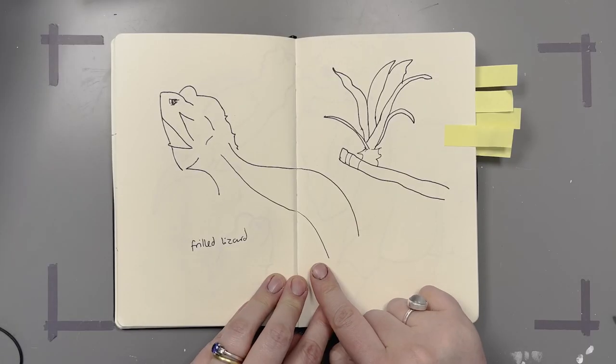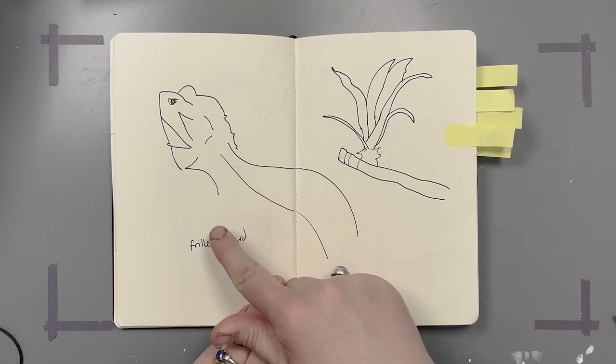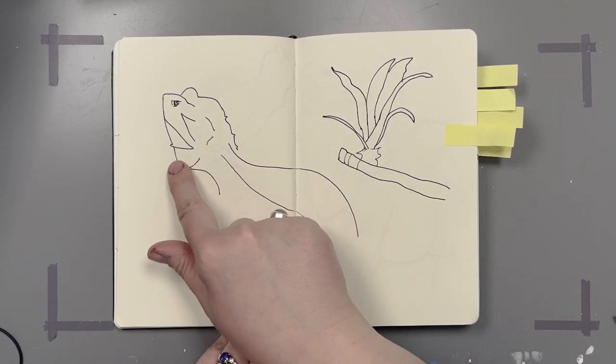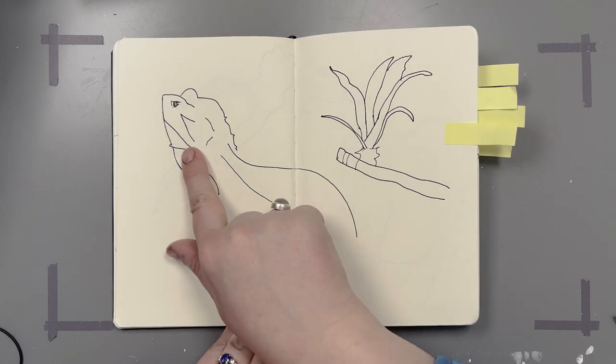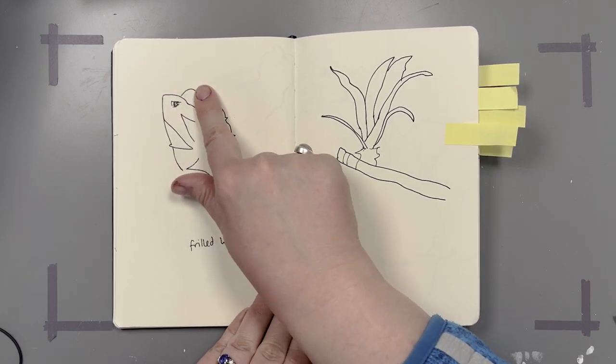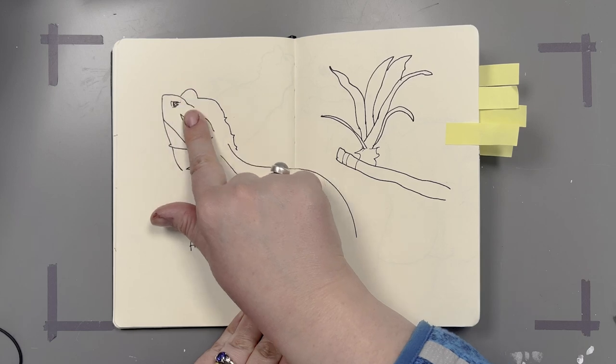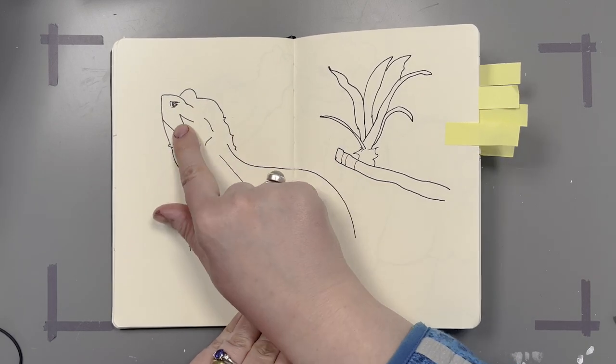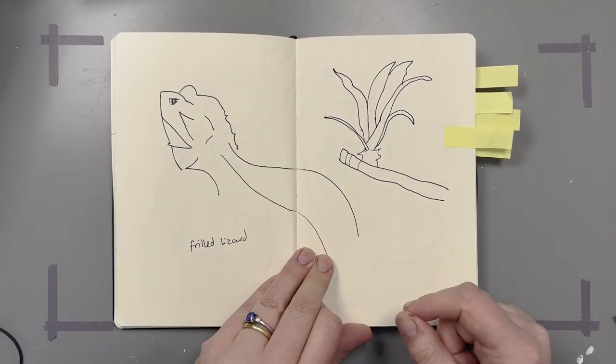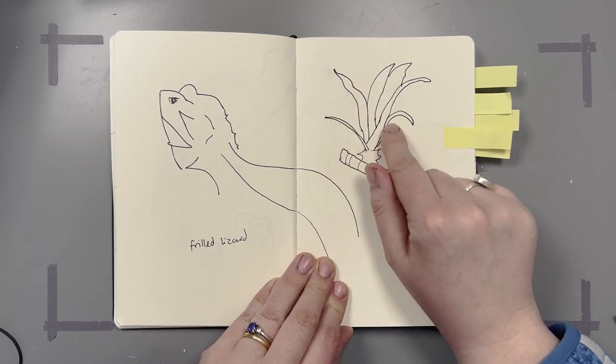This is a frilled lizard. You can see I've just traced some of the shapes with my pen, and this isn't a blind contour. Sometimes I do a blind contour, but it's very quick. This is just a very quick impression, just looking at the outlines.